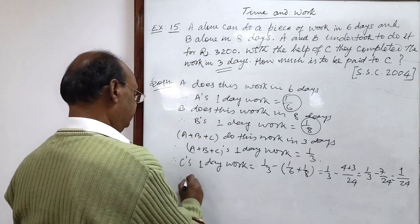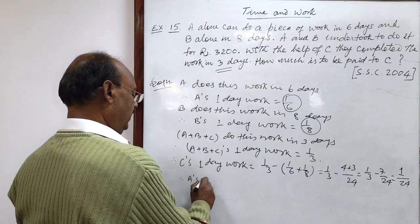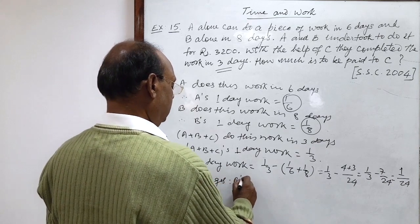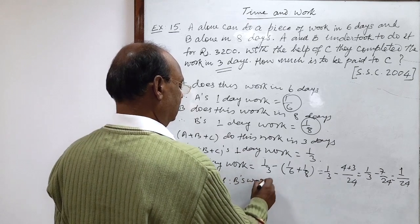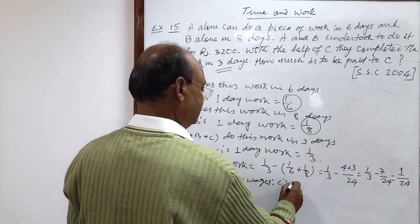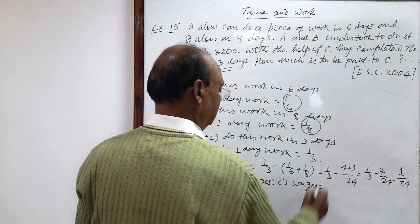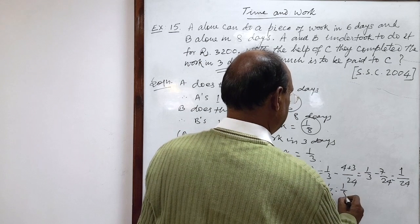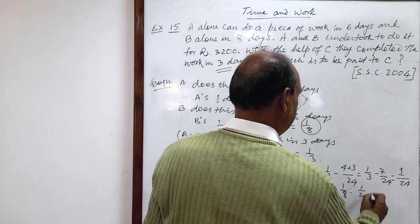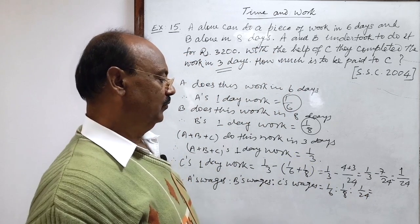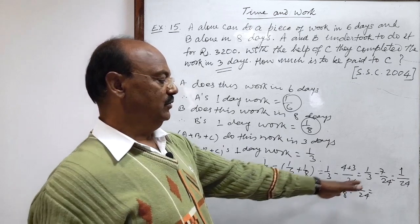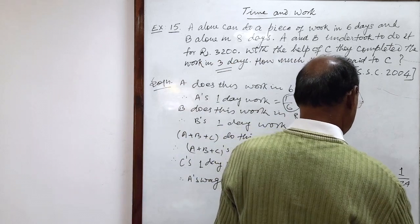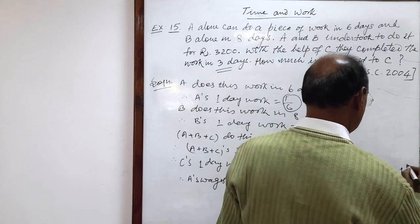So therefore A's wages is to B's wages is to C's wages will be how much? One by six is to one by eight is to one by 24. Multiplying these ratios by 24, this will be four is to three is to one.